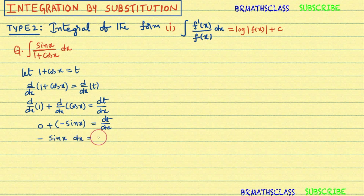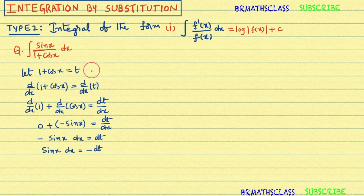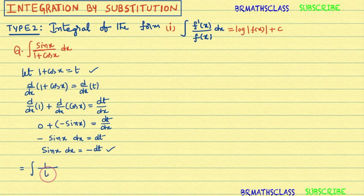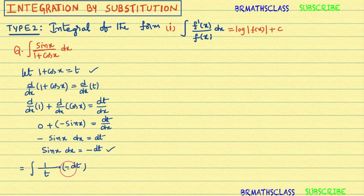Taking dx to the other side: −sin x dx = dt. We actually want sin x dx, so multiplying both sides by −1 gives sin x dx = −dt. Now substitute these two results into the given integral: ∫ 1/(1 + cos x) · sin x dx becomes ∫ 1/t · (−dt). Taking the minus outside: −∫ 1/t dt.